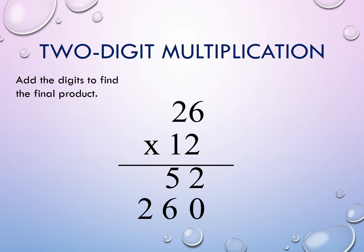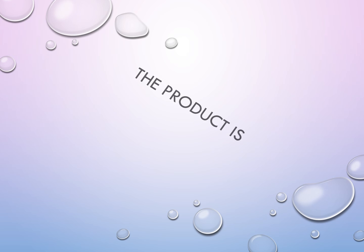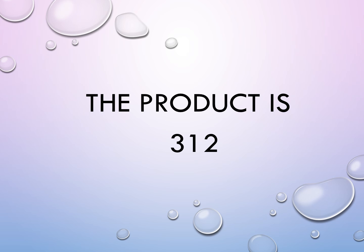Add the digits to find the final product. Add the 1's place. 2 plus 0 equals 2. Add the 10's place, regroup if necessary. 5 plus 6 equals 11. We need to regroup. Add the 100's place, regroup if necessary. 1 plus 2 equals 3. The product is 312!